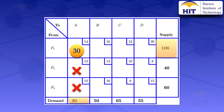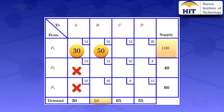Since we are done with column A, we move to column B and look at the top cell, which I've highlighted. The original supply for F1 is 100, but we already allocated 30 in that row, so the remaining supply is 100 minus 30, which is 70. The demand for B is 50. We take the minimum of 70 and 50, which is 50, and allocate 50 units there. This meets the demand for B, so we cross out column B.